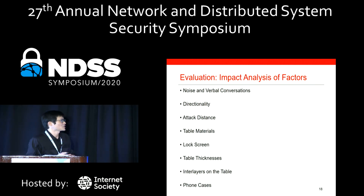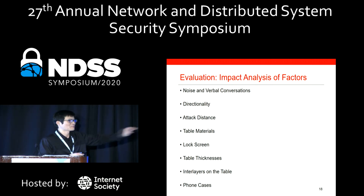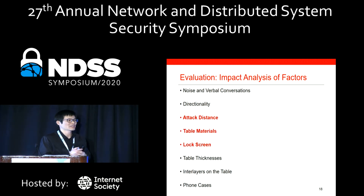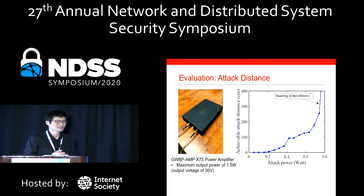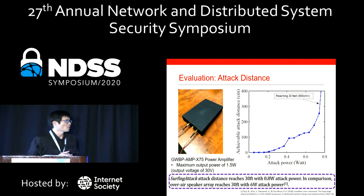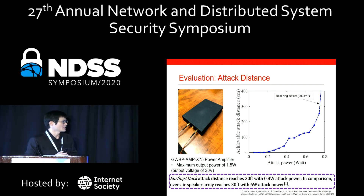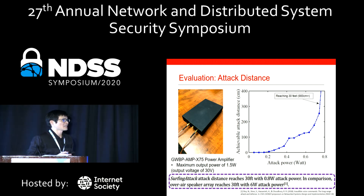We evaluate many factors including noise, verbal conversation, directionality, attack distance, table materials, lock screen, table thickness, interlayers, and phone cases. For attack distance, we ran experiments over a 30-foot-long aluminum metal table using a power amplifier to extend our range. We achieved an attack distance of 30 feet with only 0.8 watts of attack power. In comparison, the best over-the-air speaker array achieves 30 feet with 6 watts, so we save energy by 87%. We can likely go beyond 30 feet because that was the longest table we could find.